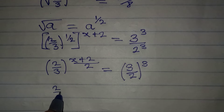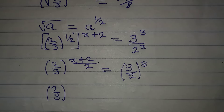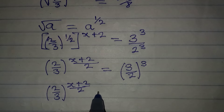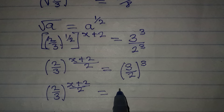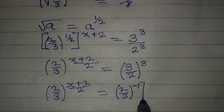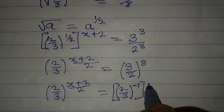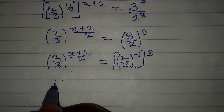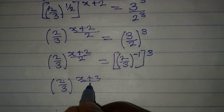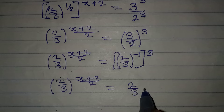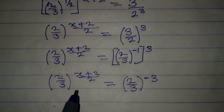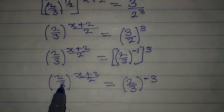I'm not changing the left-hand side yet — it remains 2 over 3 to the power of x plus 2 over 2. On the right side, I flip 3 over 2 to become 2 over 3, and since I turned it upside down, the power becomes negative: negative 1 times 3 gives negative 3. So the right side is 2 over 3 to the power of negative 3.